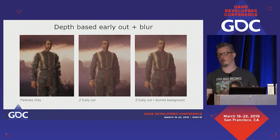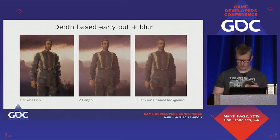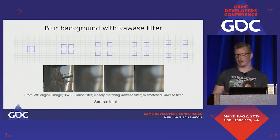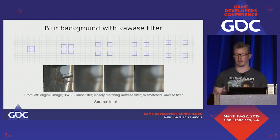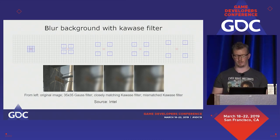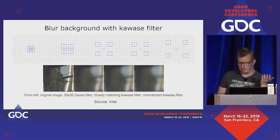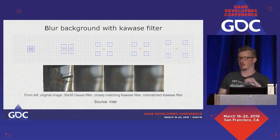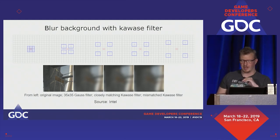To fix the hard edges, we blur the background with a Kawase filter — chosen because it's quite performant. At each step you sample outward in a cross of four samples, and with bilinear sampling you end up with double the amount. It requires a little bit of manual tweaking to avoid banding artifacts, but I recommend using it.